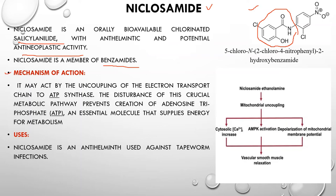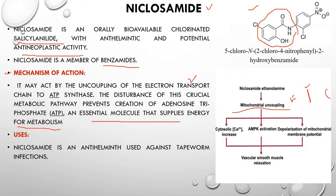The mechanism of niclosamide: it acts by uncoupling of the electron transport chain from ATP synthase. This disturbance of the crucial metabolic pathway prevents creation of ATP, an essential molecule that supplies energy for metabolism. Just as our cells need ATP to survive, parasitic worms also need ATP. Niclosamide causes mitochondrial uncoupling, which inhibits the electron transport chain so ATP is not produced, causing cell death and parasite immobilization. Niclosamide is used against tapeworm infections — remember it is specifically for tapeworm.